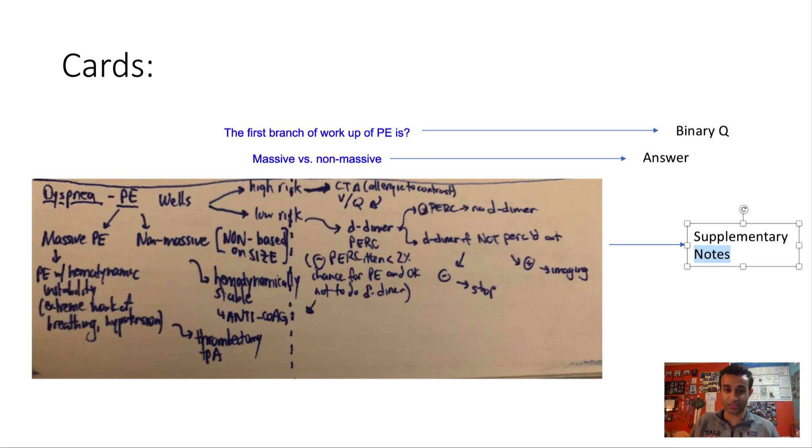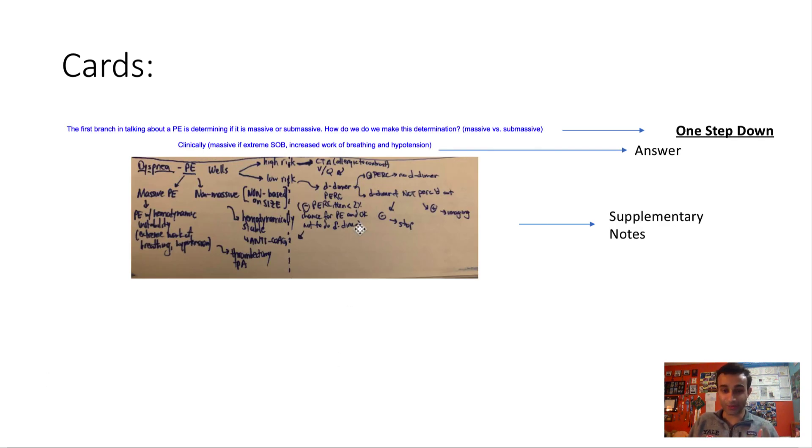The way I usually do it is I have a question, I have an answer that I usually use as a cloze deletion, and I have the notes that the answer comes from. So that's the first question. Now let me show you some of the other questions I made from this note. The other question I made here was: the first branch in talking about a pulmonary embolism is to determine if it is massive or submassive. How do we make this determination? How do you determine if a PE is massive or submassive? The answer to this is usually clinical. For example, if you think someone has a PE and they're hypotensive, that's usually a sign that they have a massive PE. If someone has a PE and they're not hypotensive, generally that's a non-massive PE. That's how they're usually defined.